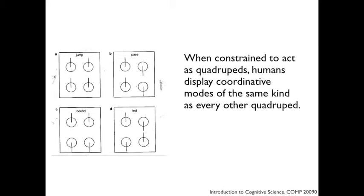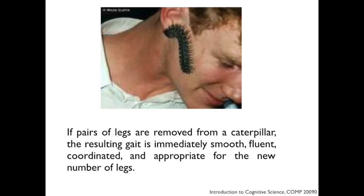What's important is that without any practice and without any experience of being a quadruped, these humans display discrete coordinative modes of the same kind as every other quadruped. There's no learning involved — this is simply how the limbs work under the appropriate constraints. You can demonstrate much the same thing with a caterpillar: if you pull the legs off in pairs, the caterpillar will have no problem adjusting to its new number of legs, showing a spontaneous reorganisation of the gait with no learning whatsoever. These animals have very little brains indeed.